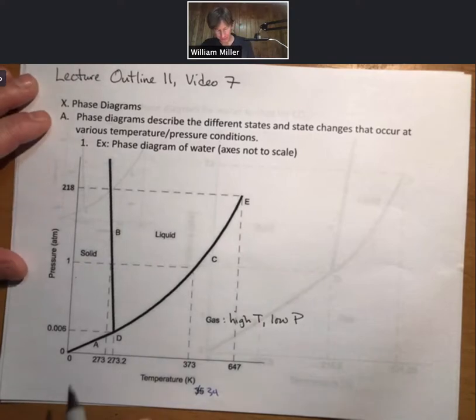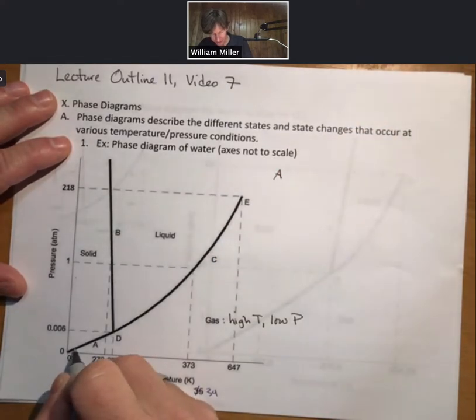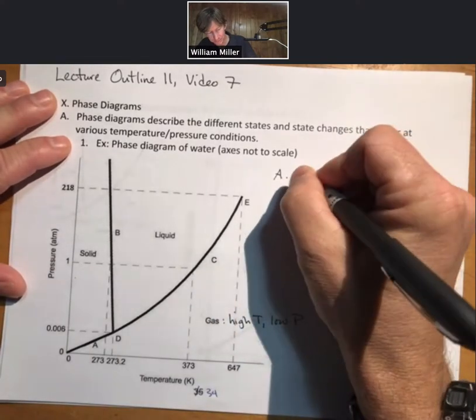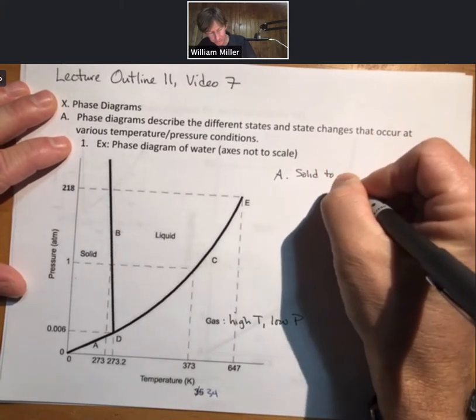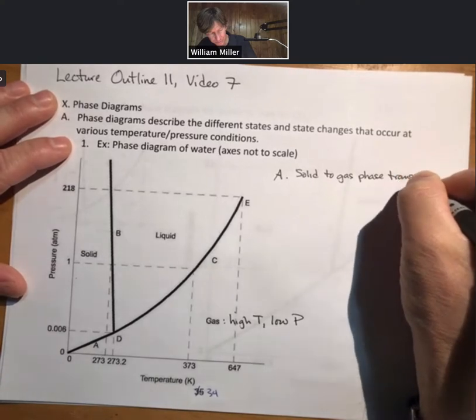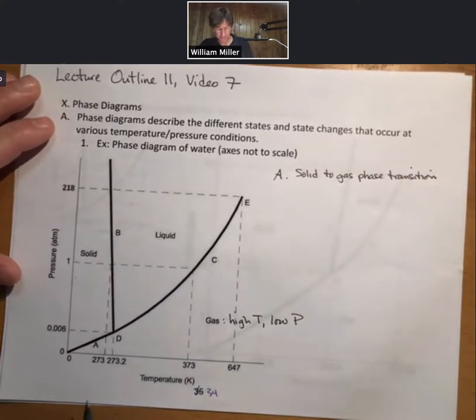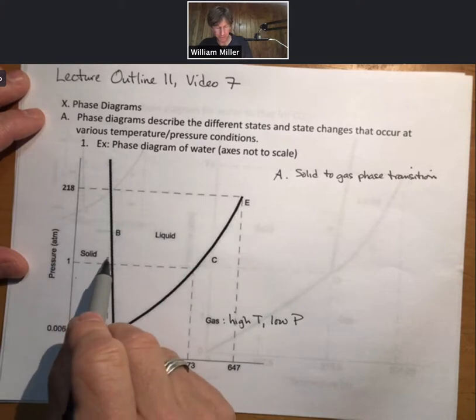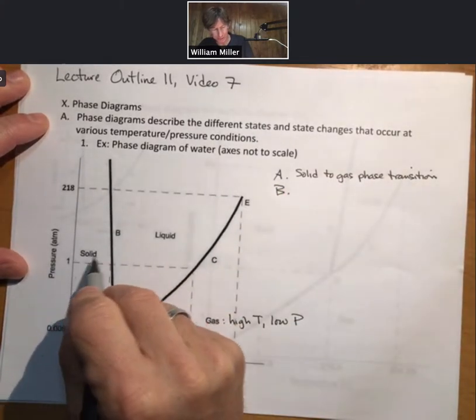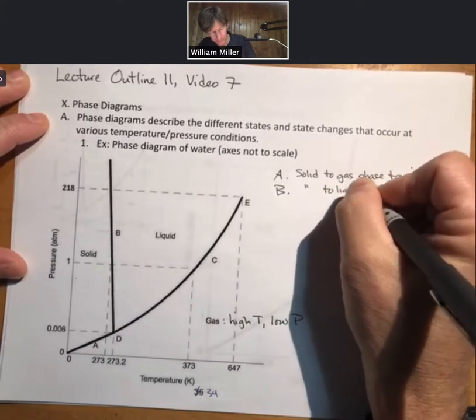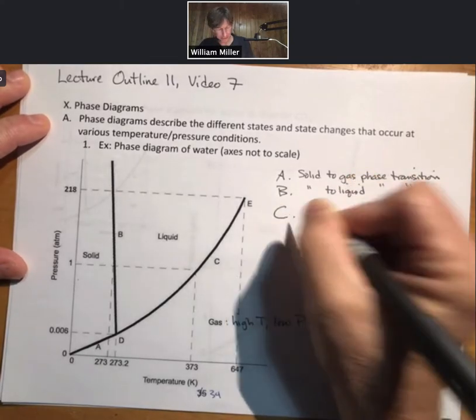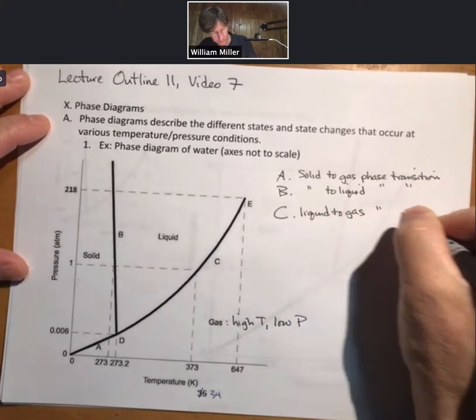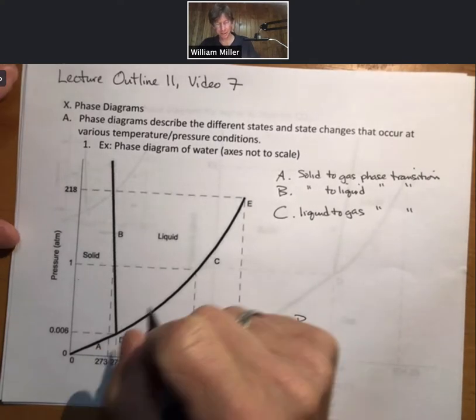Now there's a couple other interesting things we need to know about this. Line A, this line right here, is the solid to gas phase transition, and it occurs at a range of pressures and temperatures. B is the same thing for solid to liquid, and C for liquid to gas. Those are phase or state transitions.